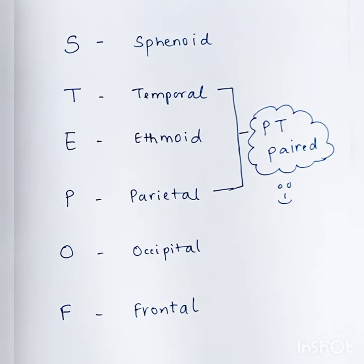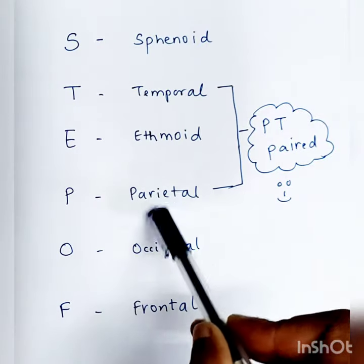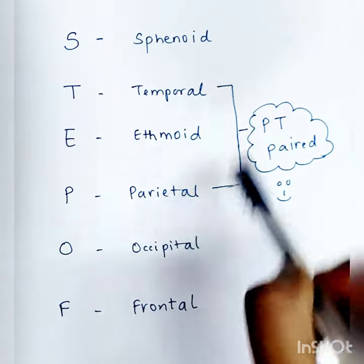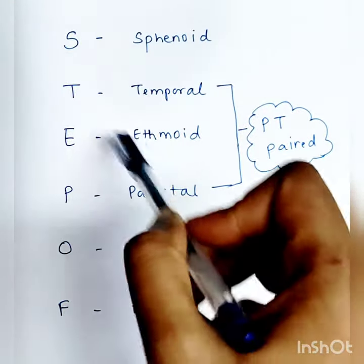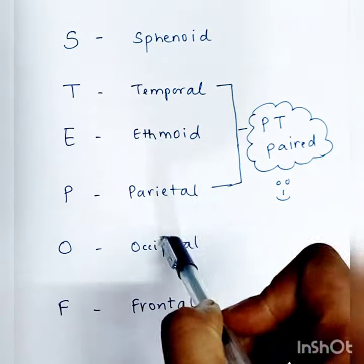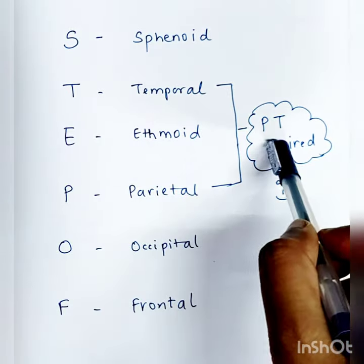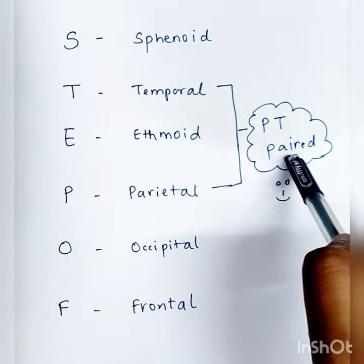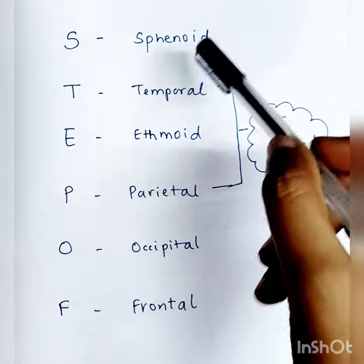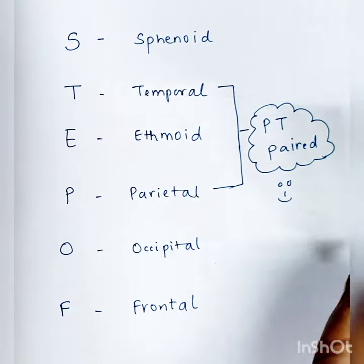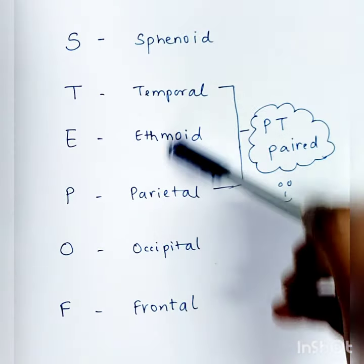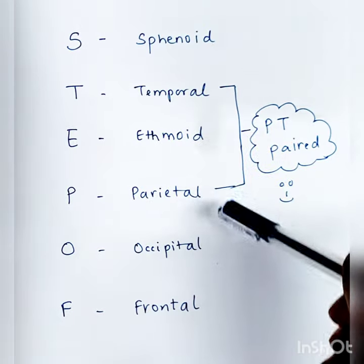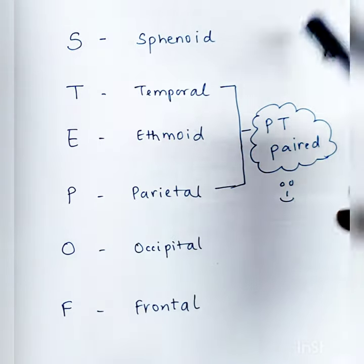Out of these, only two — parietal and temporal — are paired bones, meaning they are two in number each. So we say PT, like the PT class we have in school, is paired. So in total you have eight bones: six bones, but parietal and temporal are two in number each, making seven and eight.